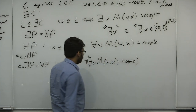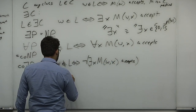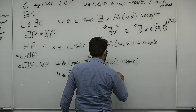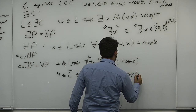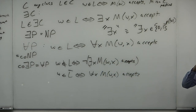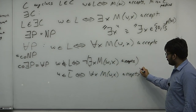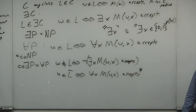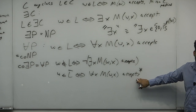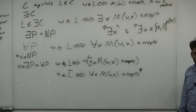Take the negation of that statement: W is in the complement if and only if for all X, M on WX accepts — though it should technically be 'rejects' with a complemented machine. The complement of the statement should be: for all X, M on WX rejects. But we say 'accept' simply because we care about accepting into a co-NP language more than rejecting. Logically it's the same — take the machine that would reject and swap accept and reject.